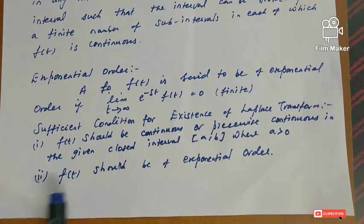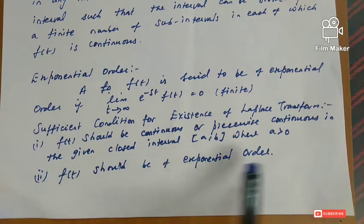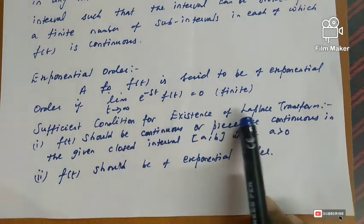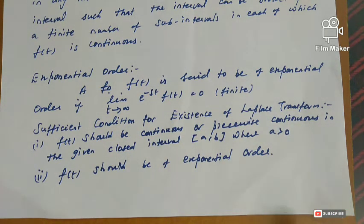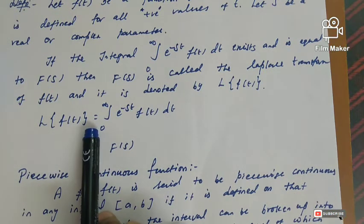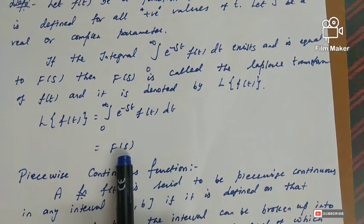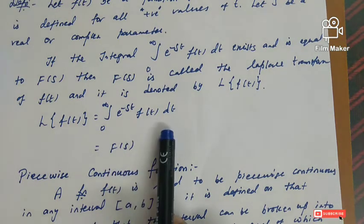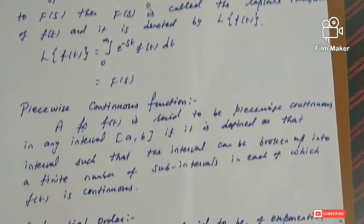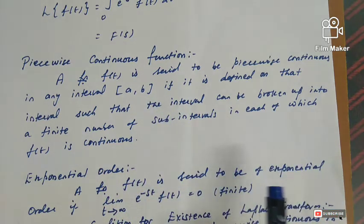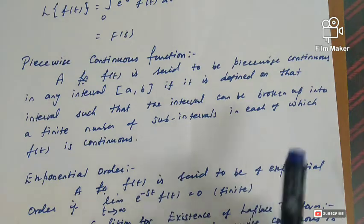So, the first function should be piecewise continuous, and the second condition is that f of t should be of exponential order. Both conditions are required. The Laplace transform definition: L of f of t equals the integral value, which is a function of s. Piecewise continuous means the given closed interval is split into sub-intervals, and in each sub-interval the function is continuous.